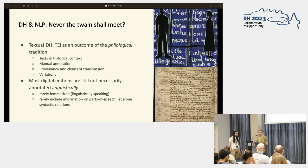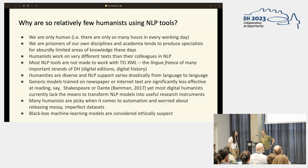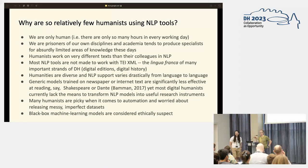They rarely include syntactic relations, and this is both totally understandable and somewhat curious at the same time, considering that there are NLP tools out there that can produce these kinds of linguistic annotations — named entity recognition, etc. — automatically. So why are so relatively few humanists using NLP tools?